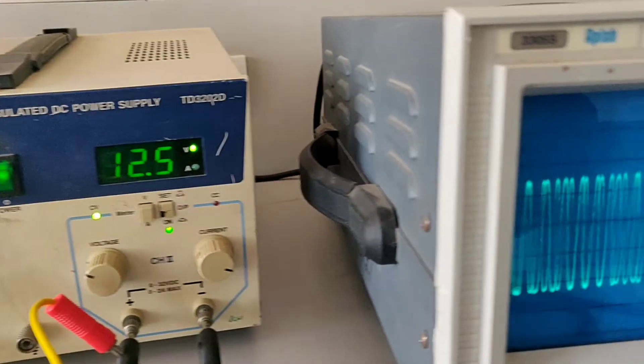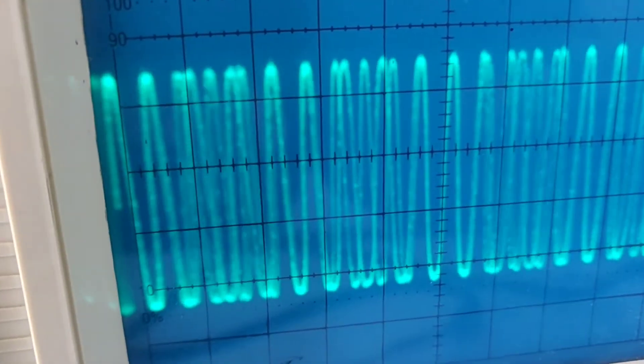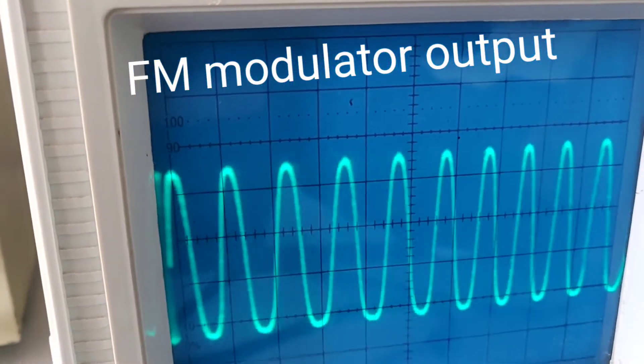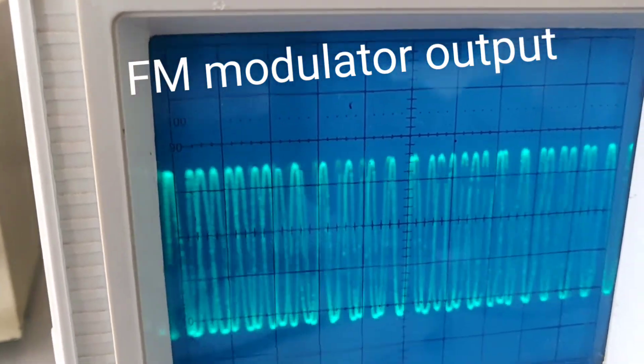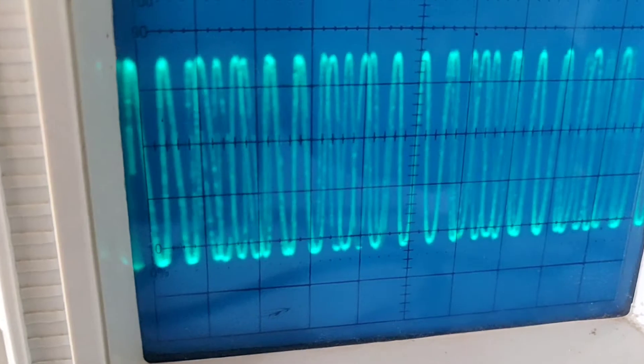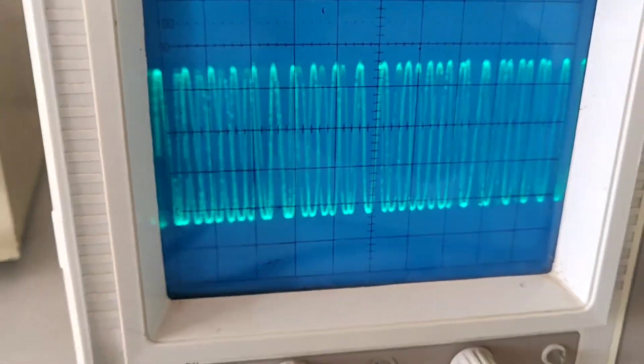Now, observe FM on the CRO. See that. Carrier signal is converted into frequency, that is, modulation takes place. Since the frequency is varied according to the modulating signal amplitude.